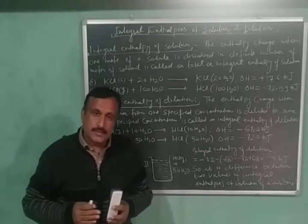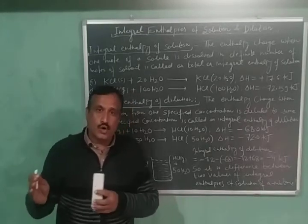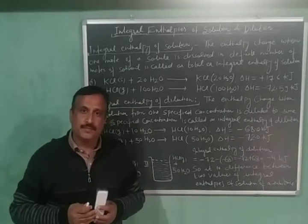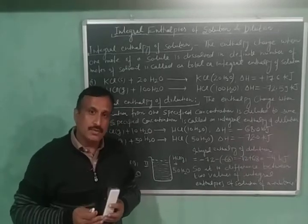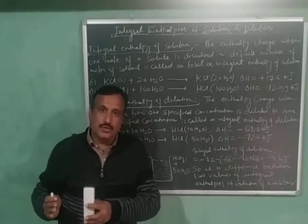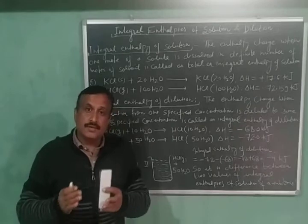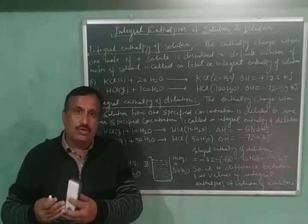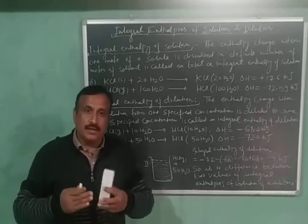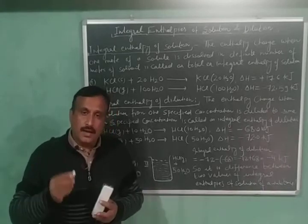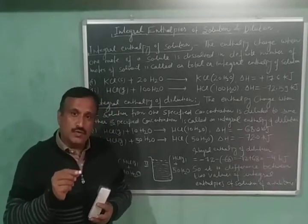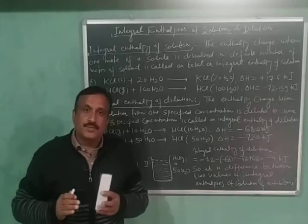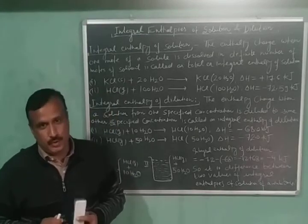When a solute is dissolved in a solvent, heat may be evolved or absorbed. For example, when potassium chloride is dissolved in water, heat is absorbed. And when HCl or NaOH is dissolved in water, then heat is evolved. The actual amount of heat evolved per mole of the solute depends upon the final concentration of the solution.